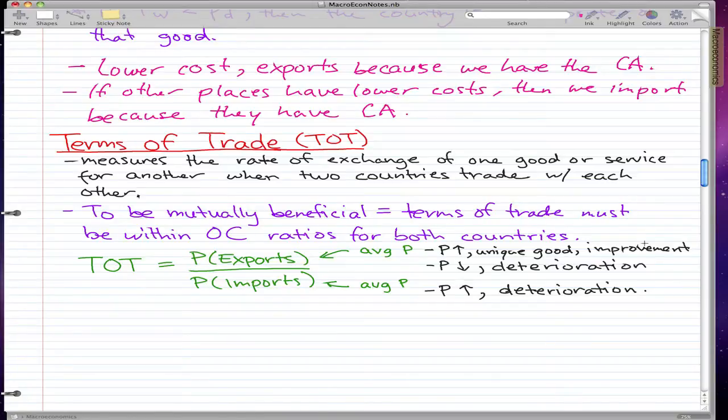We don't want that deterioration. For imports, that means the import prices are rising faster than the export prices, and the terms of trade has deteriorated. That means a greater volume of exports have to be sold to finance a given amount of imported goods and services.